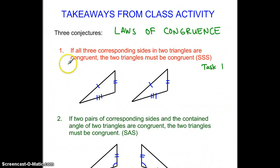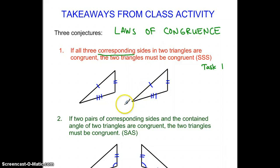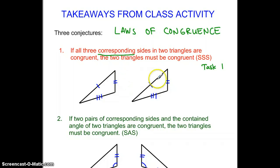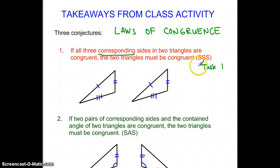If we're using the correct terminology, we say if all three corresponding sides — and corresponding means matching — are congruent, then the triangles must be congruent. The longest side on this triangle matches with the longest side on the other triangle, the shortest side matches the shortest, and so on. Our acronym for this is SSS for side, side, side.